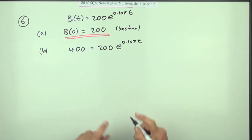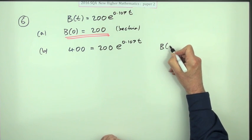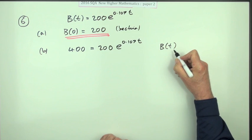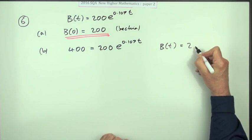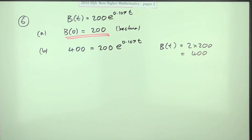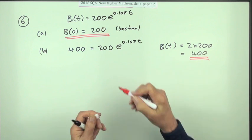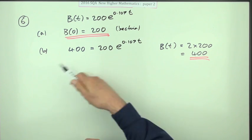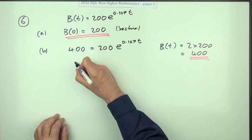Or if you feel you need to justify it, in case there's a mark there, you could see the doubling time: that will be 2 times 200 which equals 400, if you want a justification of why you're using the 400. But in the end it's just going to cancel out, so you're going to have e to the 0.107t equals 2.